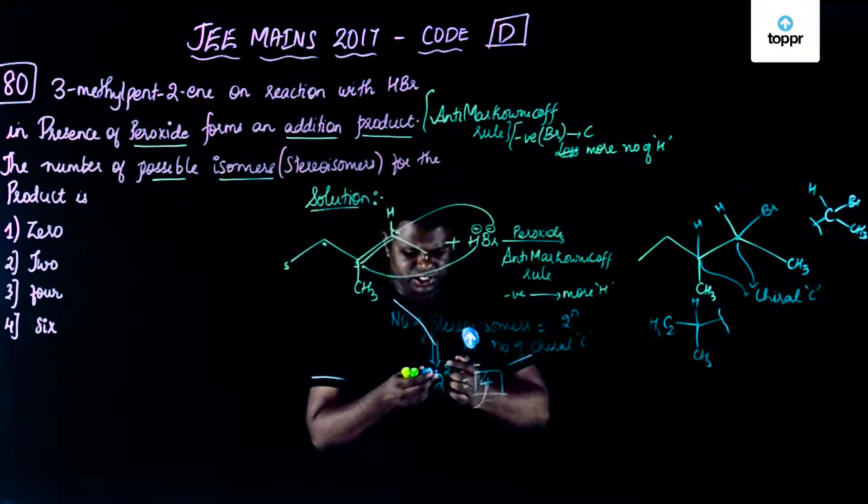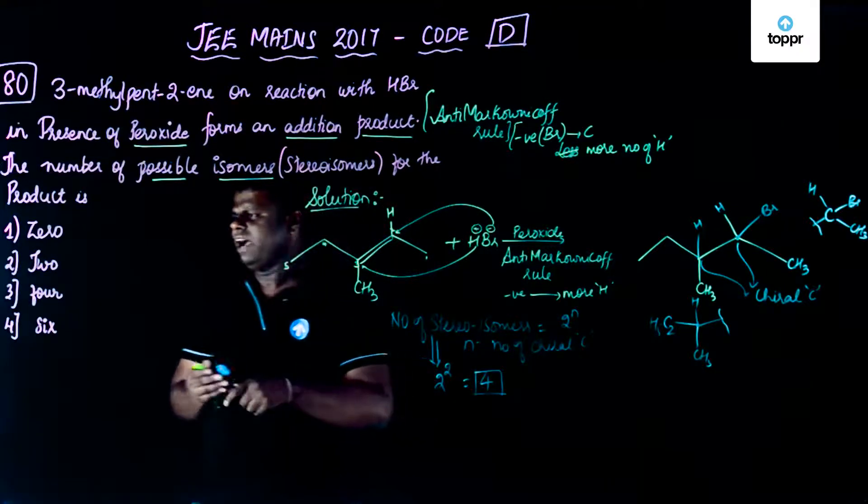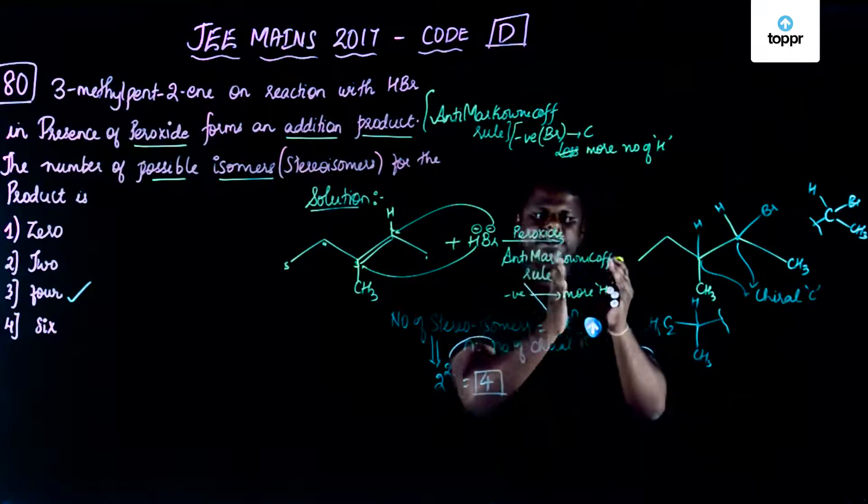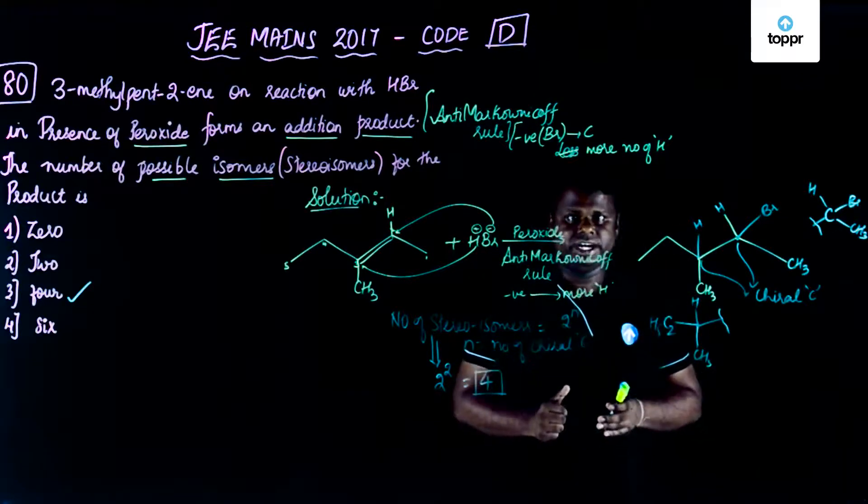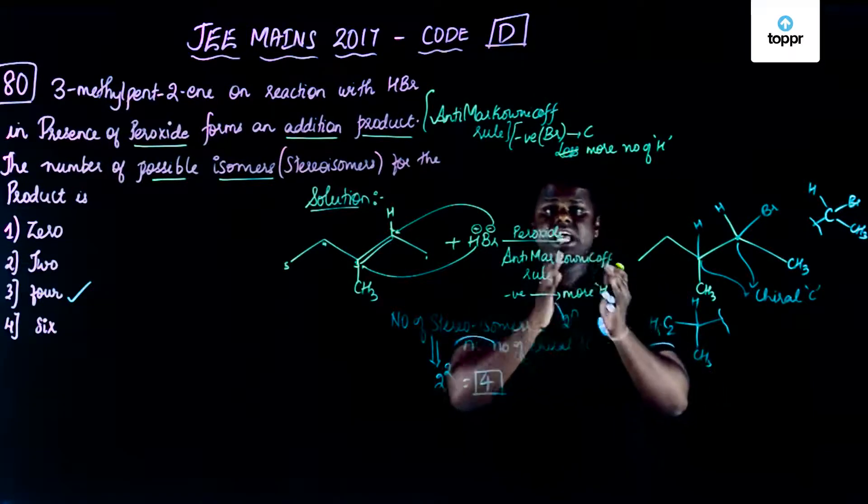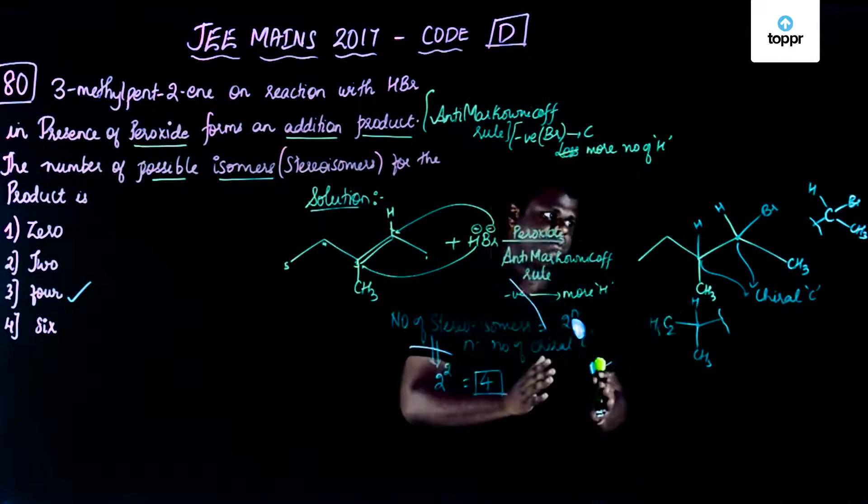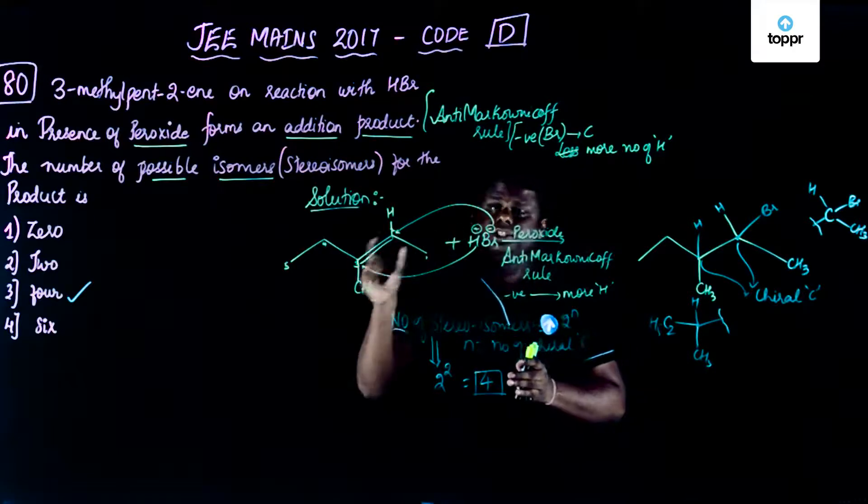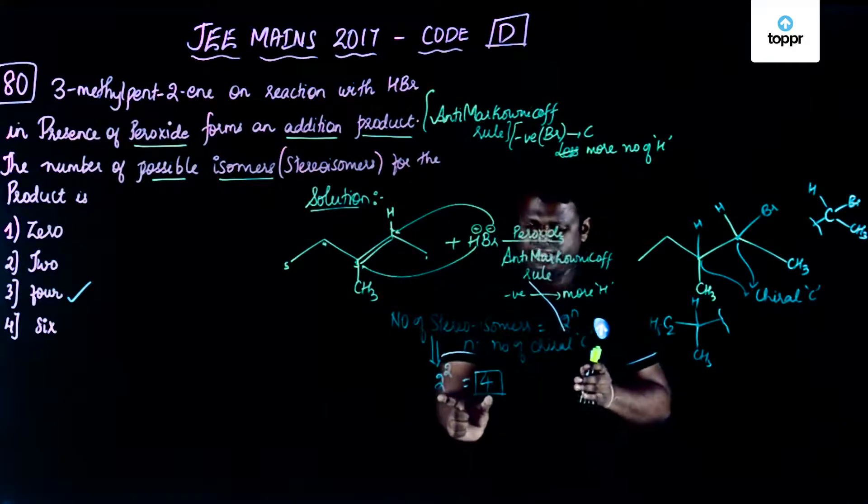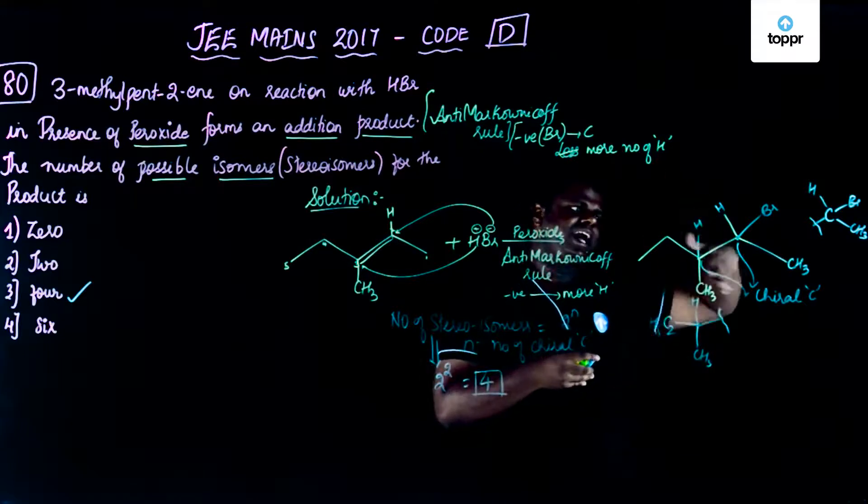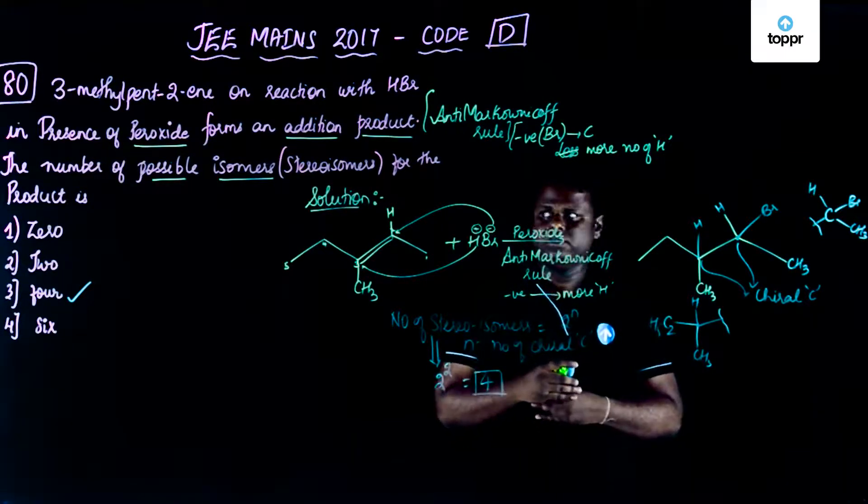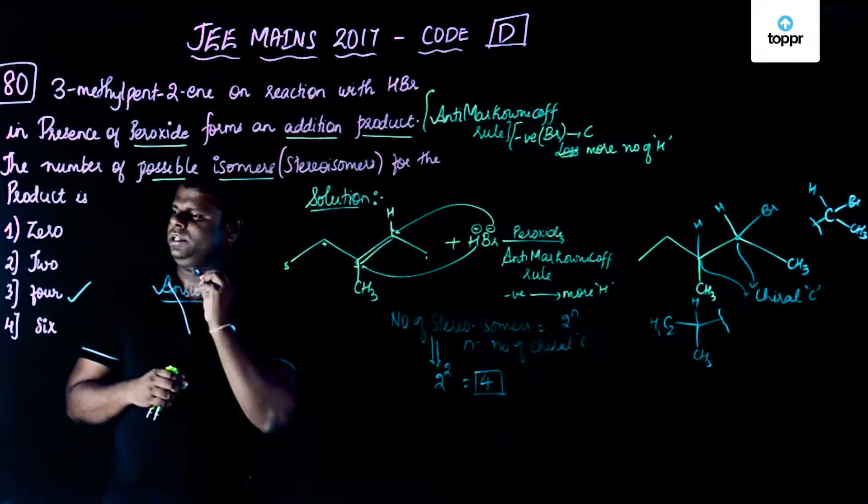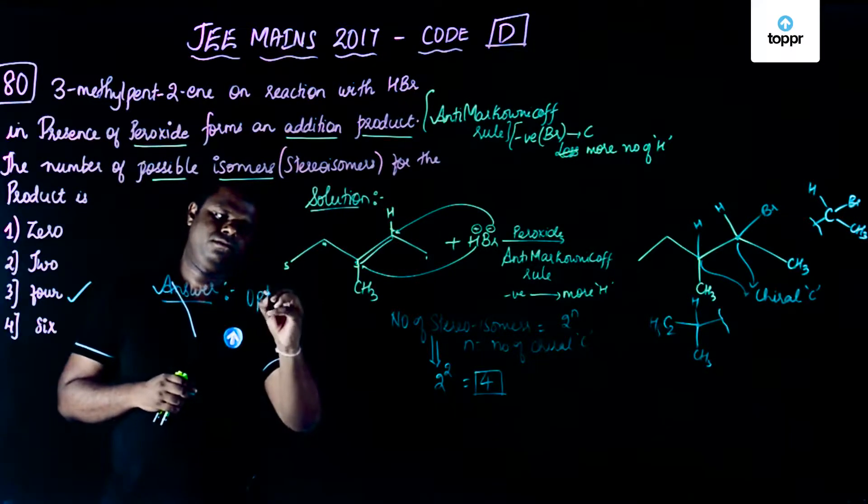So now let's have a look whether this option matches with any of these. So you have option number 3 which says that it is 4. Now why is it that they have given the word possible? Now there could be a possibility that it may form a racemic mixture. So it may not be optically active. So that is the reason they have given possible stereoisomer. Let's say if there is a plane of symmetry in this particular molecule, the molecule will be optically inactive. So in order to make sure that such confusion is not there, they have given number of possible stereoisomers, which is equal to 2 square which is equal to 4. And definitely this molecule does not have a plane of symmetry. So things have been pretty much taken care of. So the correct answer for this question number 80 is option 3.